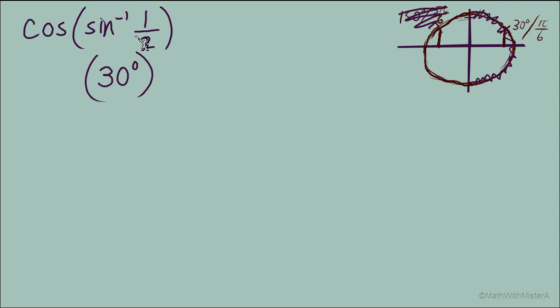Now that we've determined the inverse sine of 1 half, we're looking to find the cosine of 30 degrees. And the cosine of 30 degrees equals this horizontal coordinate, which is radical 3 over 2.